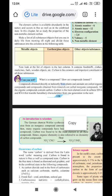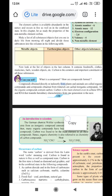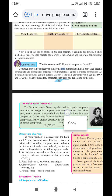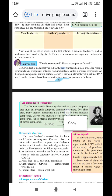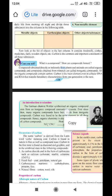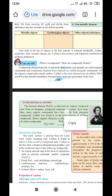Compounds obtained directly or indirectly from plants and animals are called organic compounds. And compounds obtained from minerals are called inorganic compounds. So, whatever objects you obtain from plants and animals, they are called organic. And if you obtain it from minerals, it is called inorganic.